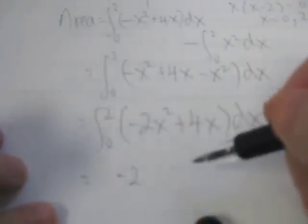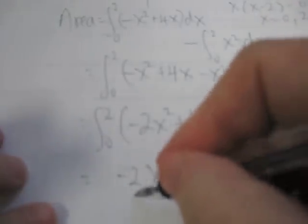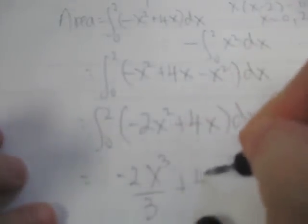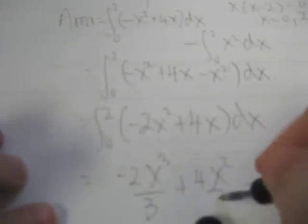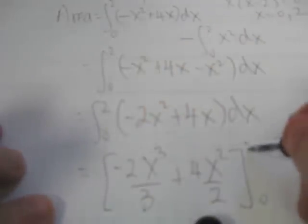Now, since this is a polynomial function, it's very easy to integrate. We just do the reverse power rule, or the power rule for integration, and this will become negative 2 x cubed on 3 plus 4x squared on 2, and we have to evaluate that between 0 and 2.